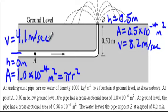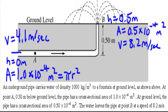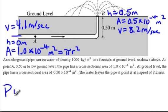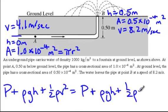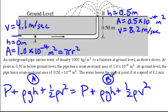Now for the Bernoulli's principle part of this problem, they're going to ask me for my absolute pressure at point A. That takes me to the Bernoulli's principle equation: Pressure plus rho GH plus one-half rho V squared equals pressure plus rho GH plus one-half rho V squared. We label one side of our equation at point A and one side at point B, keeping everything straight with our labeled diagram.